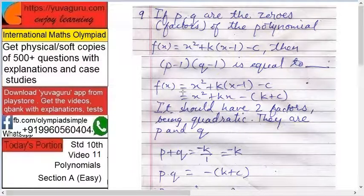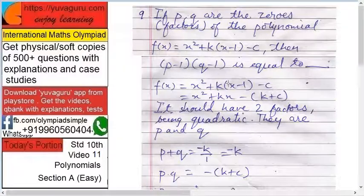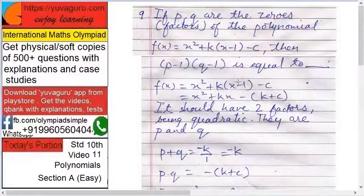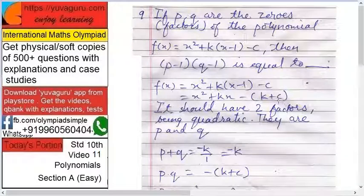So let's solve this first. f(x) equals x squared plus k into (x-1) minus c. Solve this: x squared plus kx minus k minus c. Bring minus common, k plus c.